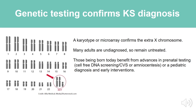Other genetic tests for diagnosis include CVS or amniocentesis. In addition to this, a lot of pediatricians, as part of their diagnostic workup, order karyotyping, which actually helps enable early interventions.